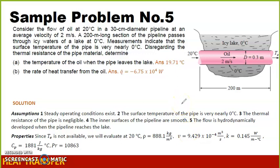Sample problem number 5 for internal forced convection. For problem number 5, we're given a pipeline that passes through an icy lake which is at 0 degrees Celsius.